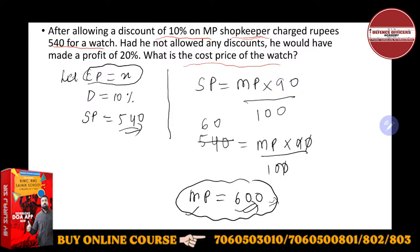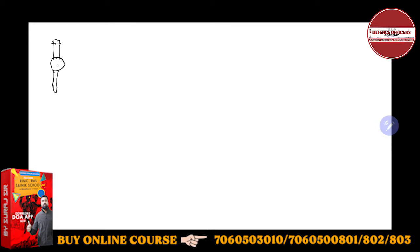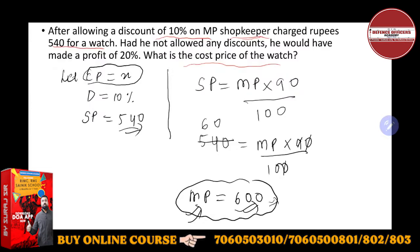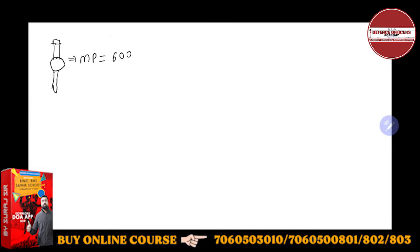MP is the price which the shopkeeper has assigned. Suppose there is a watch — the mark price assigned by the shopkeeper is 600. Now, had he not allowed any discount — if he not allowed any discount — we use that condition.